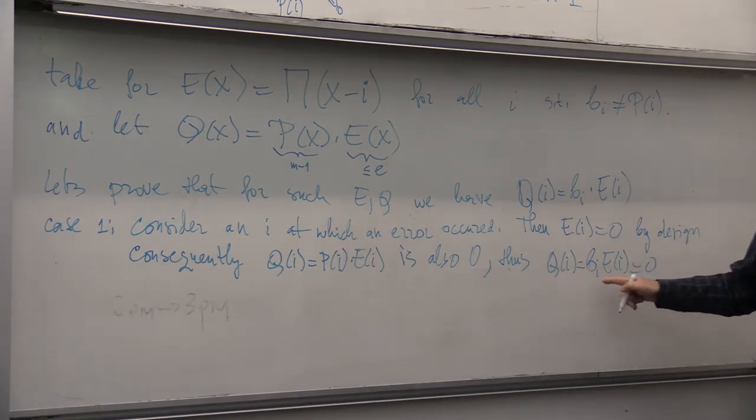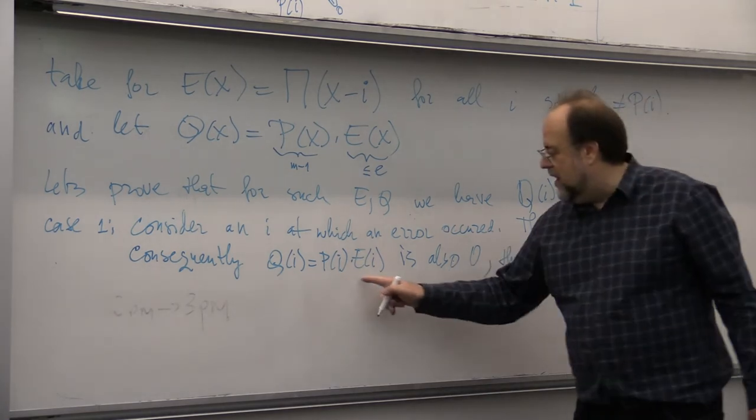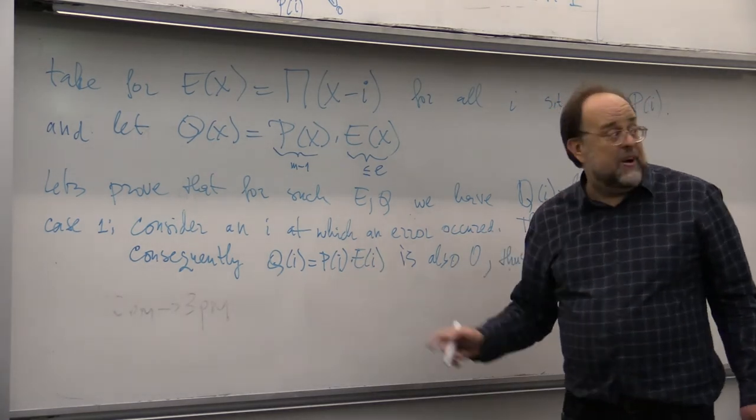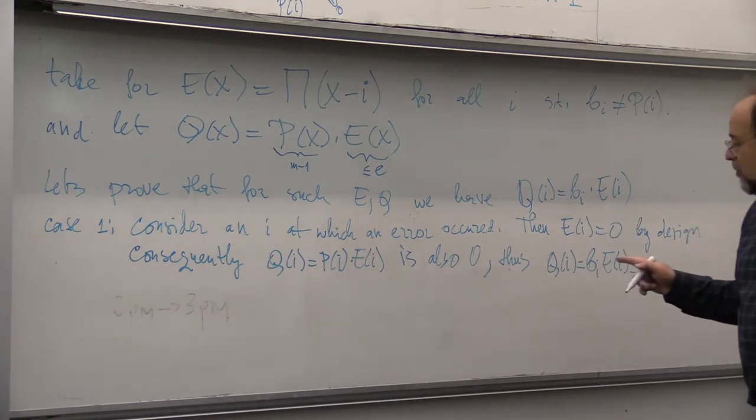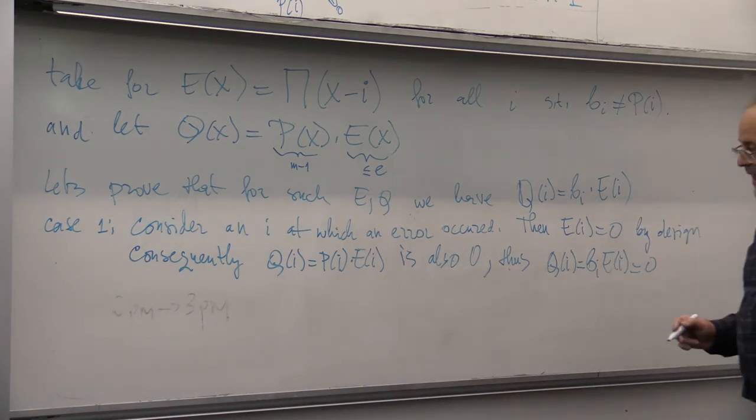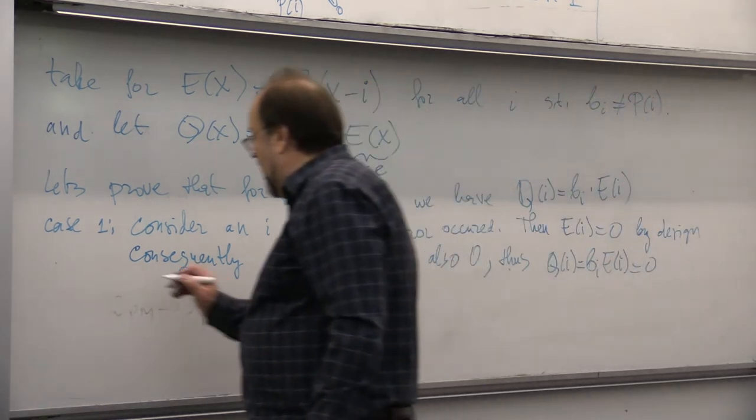Right? Because Q of I is this product of P of I and E of I, Q of I is equal to zero. Oh shoot, Q of I is equal to zero when there is a mistake. Okay. Case two.